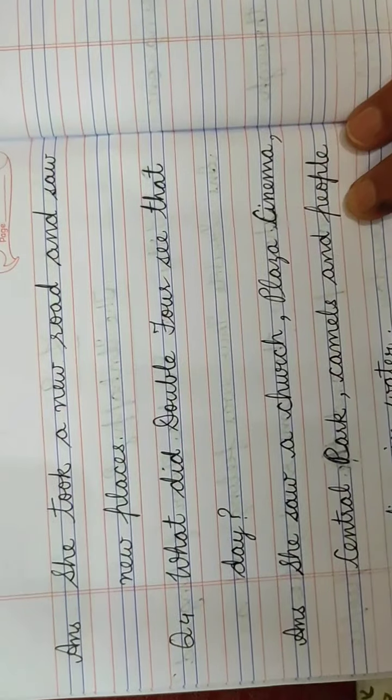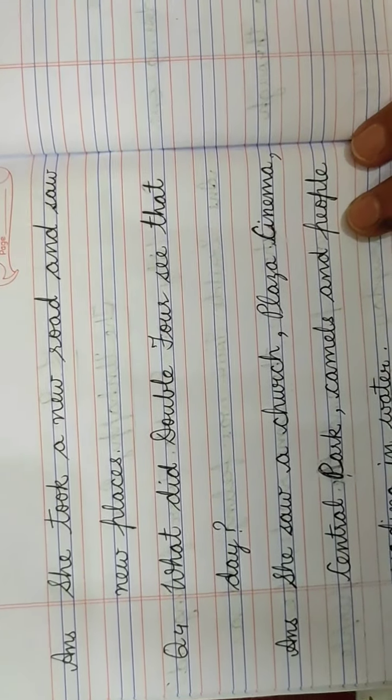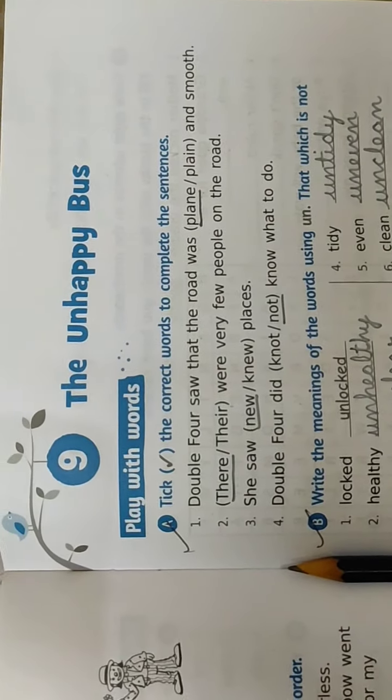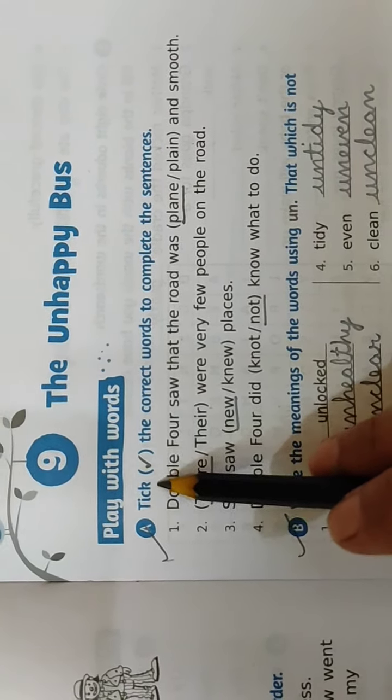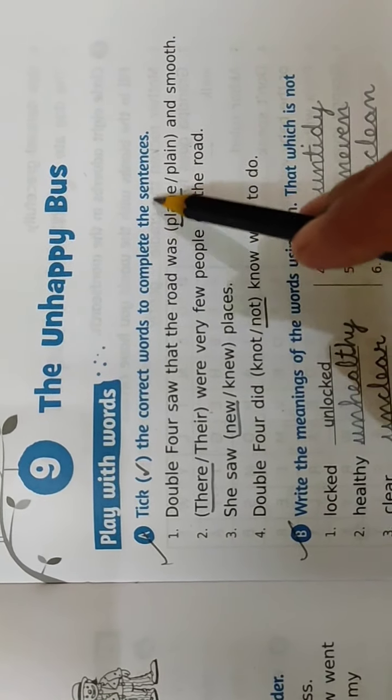Now after this, children, take out your English workbooks. We will do the workbook exercises of this lesson now. Take out page number 35 of your workbook. On that page, we are going to start with the workbook exercises. So the first question is, tick the correct words to complete the sentences.